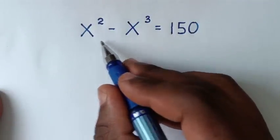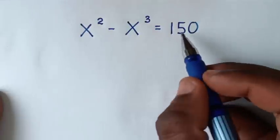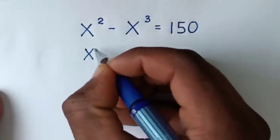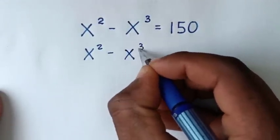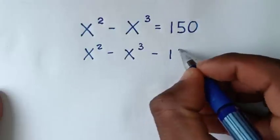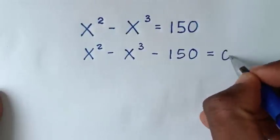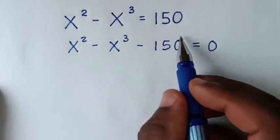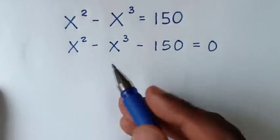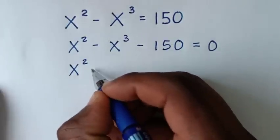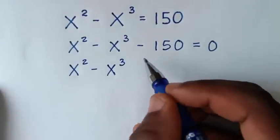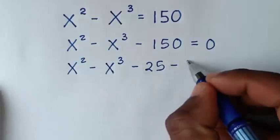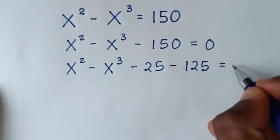To find the values of x from this equation, in the first step we'll take 150 to the left side. So it will be x squared minus x power 3, then minus 150 is equal to 0. We'll split this minus 150 according to the corresponding exponents, so minus 150 is the same as minus 25 minus 125, which is equal to 0.